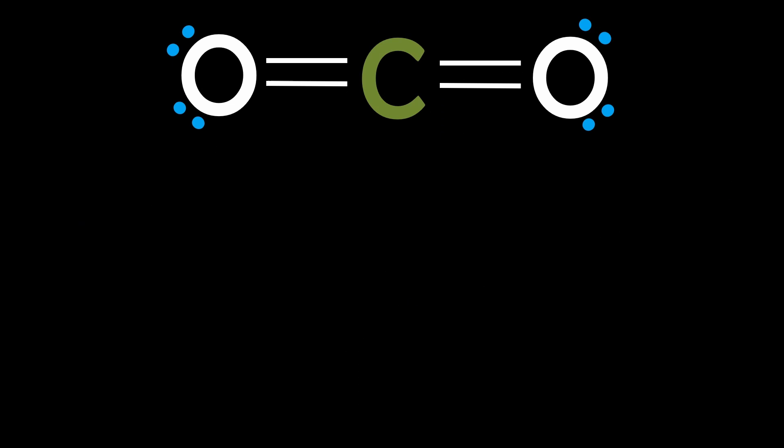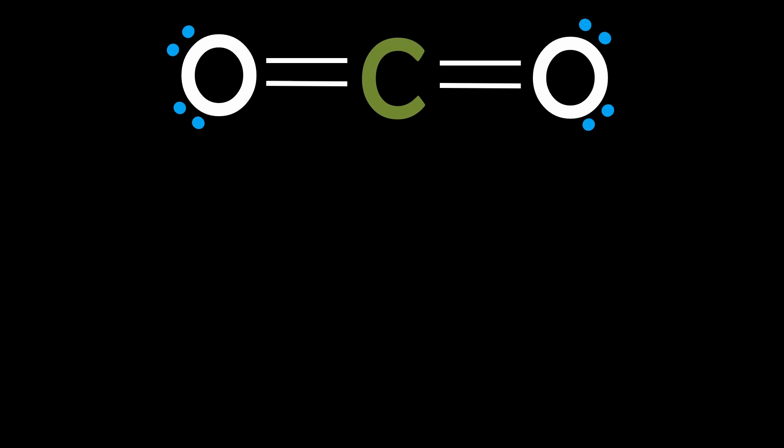Now, let's look at a more complex molecule like carbon dioxide, where carbon has different types of orbitals. These are the electron configurations of each atom involved. We can see that carbon has two unpaired electrons in its p-orbitals, and each oxygen has two unpaired p-electrons also.